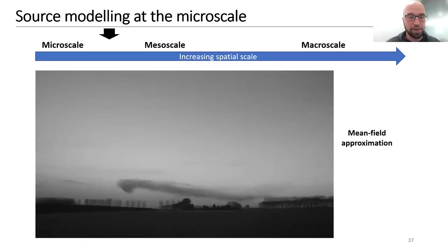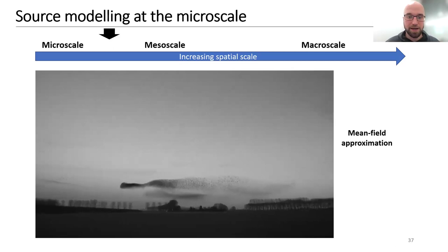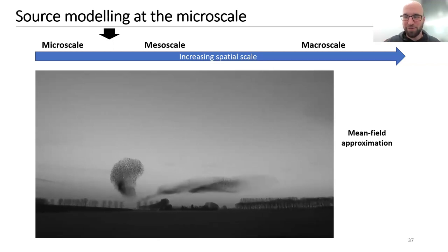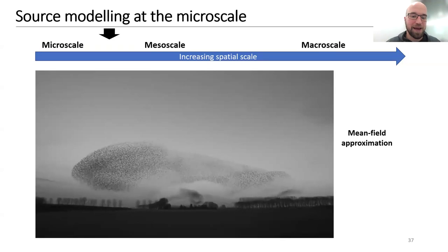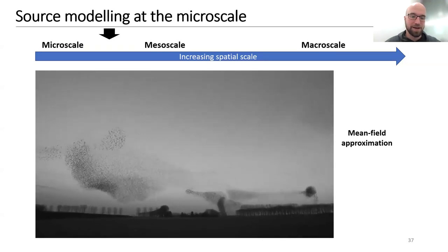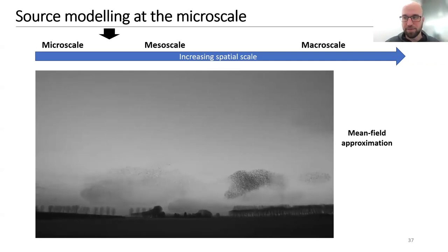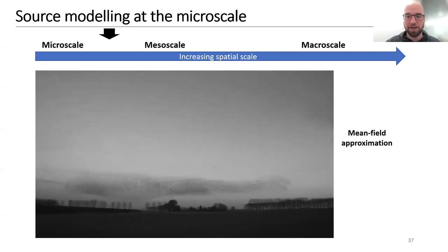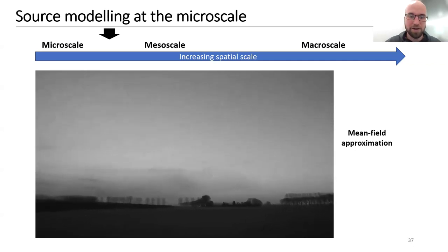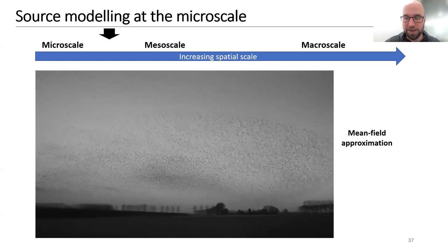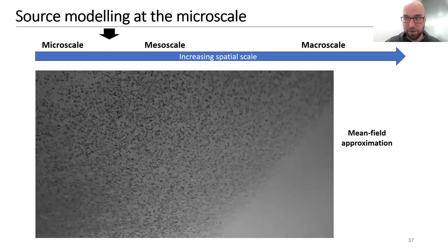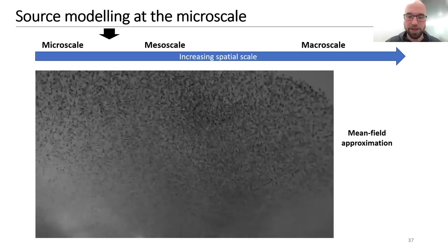One intuition for mean field approximation: imagine a swarm of birds. You could describe the movement direction of each bird, or you could describe the mean of the swarm. The idea is that you can already say something interesting about the system by describing where the mean is moving. In DCM, we describe the mean of a neural population, and this tells us something interesting about the firing rate.